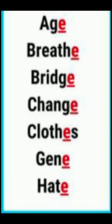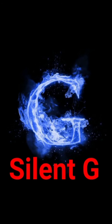Silent E — it is a vowel. Whenever you find E at the end of any word, it means you should never pronounce the E. Examples: brief, bridge, change, clothe, gene, hate.